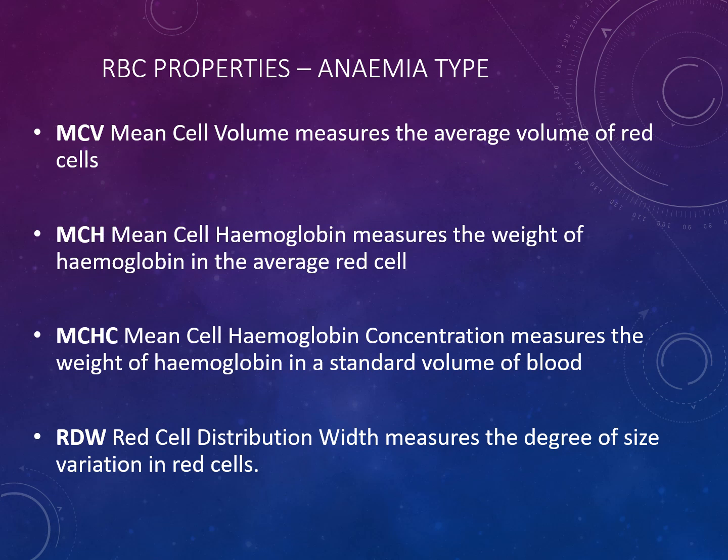We also look at red blood cell properties, which give an indication of what type of anaemia it is. You have the mean cell volume (MCV), which measures the average volume of red cells. You have the MCH, which is the mean cell haemoglobin, measuring the weight of haemoglobin in an average red cell. You have mean cell haemoglobin concentration, which measures the weight of haemoglobin in a standard volume of blood. And you have red cell distribution width, which measures the degree of size variation in red blood cells.